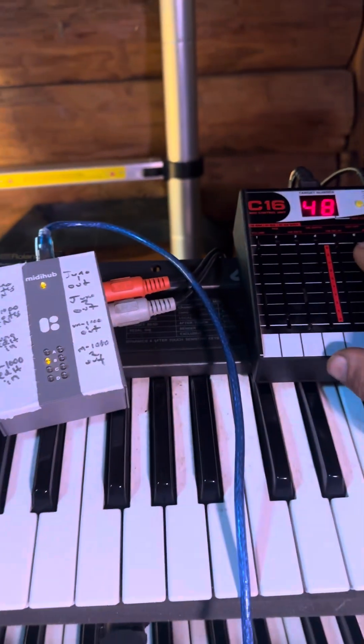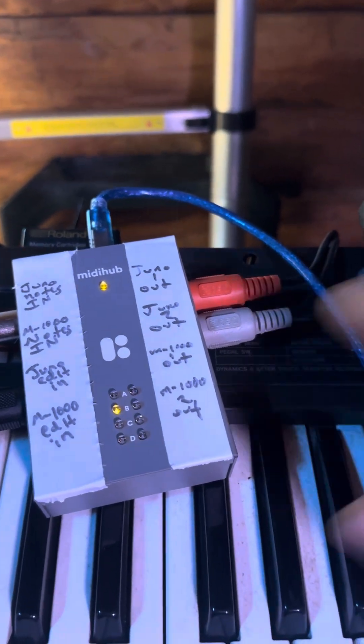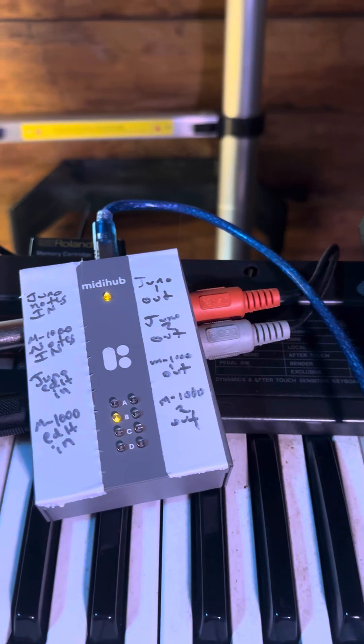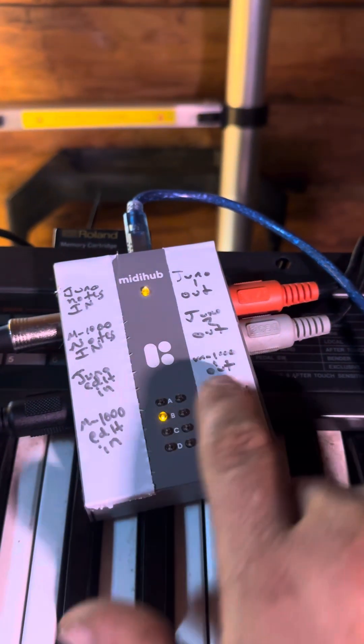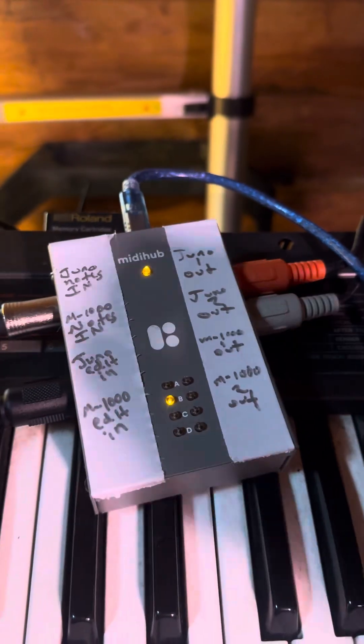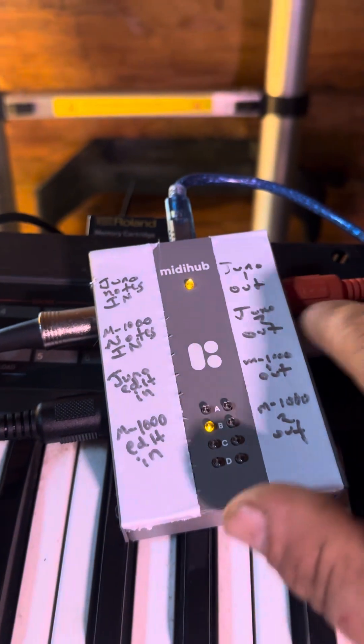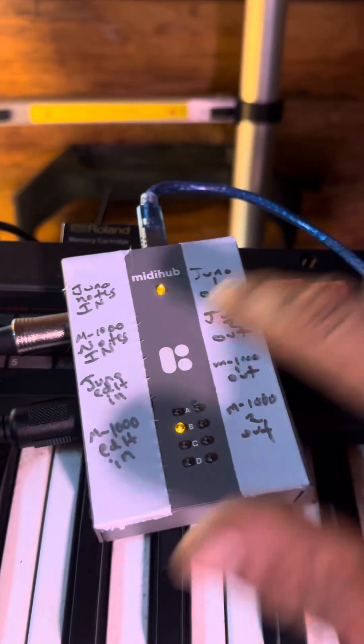Then I've got the editor going into input C. As you see, when I move a slider, input C activates on the left there. And it's being basically throughed, copied to output A and B, which is the same two outputs that the notes go to.